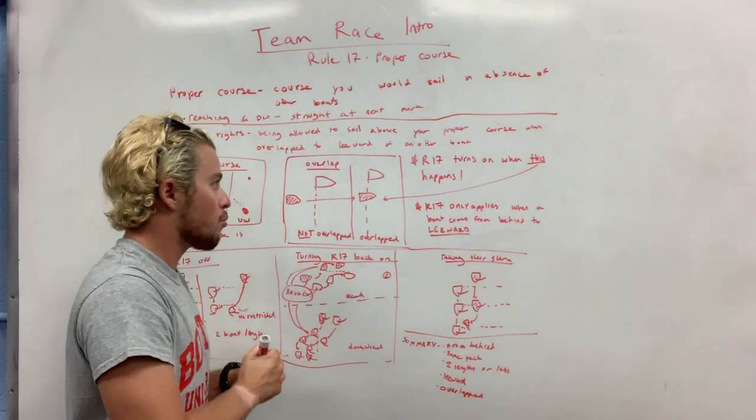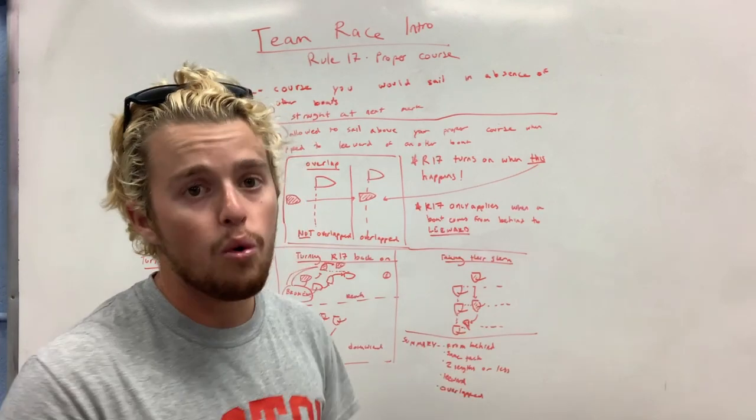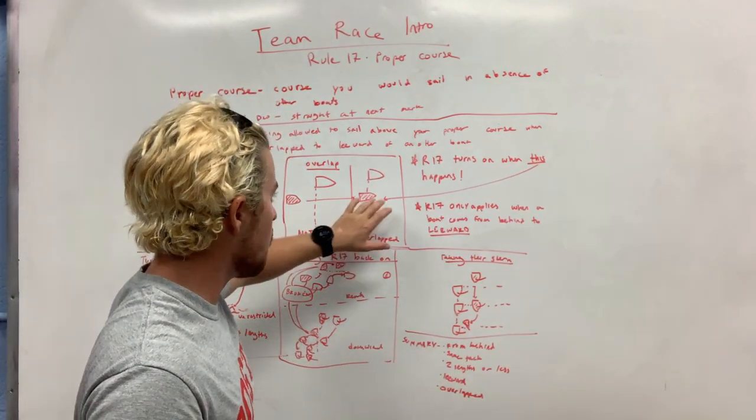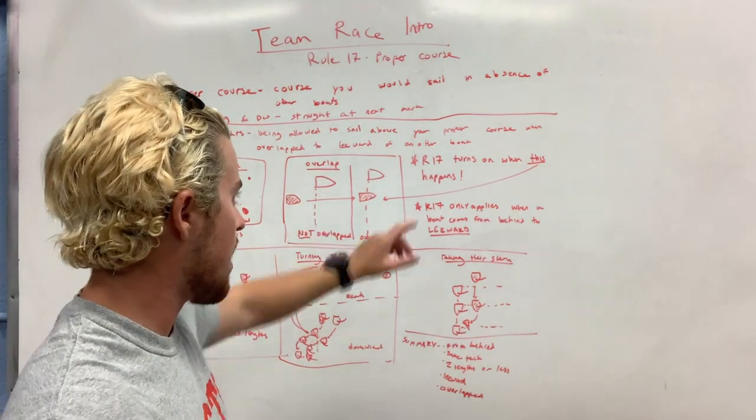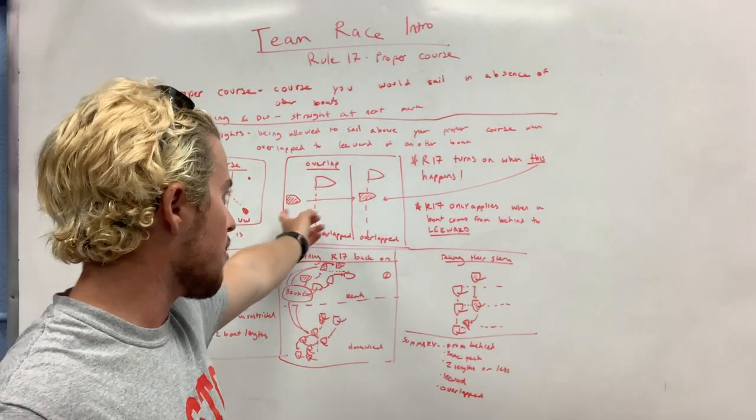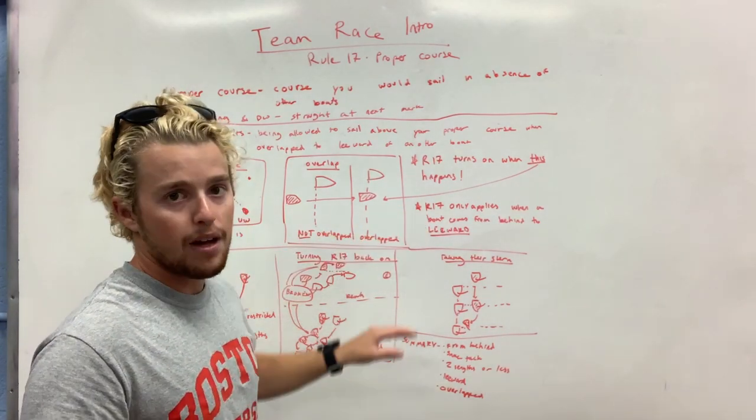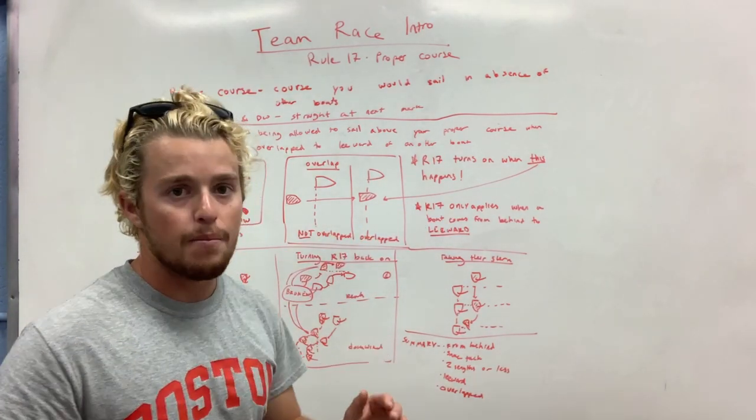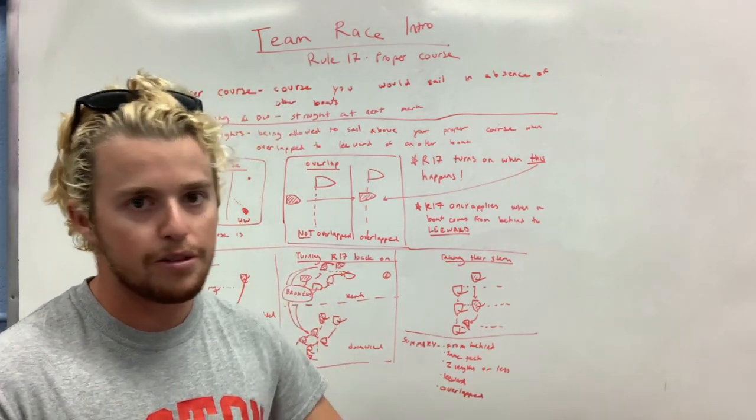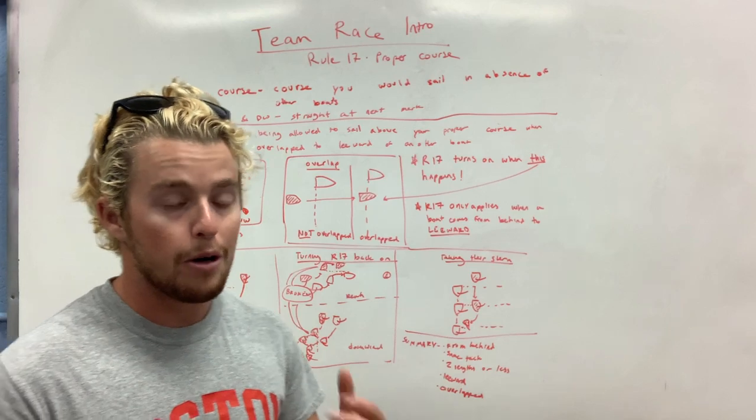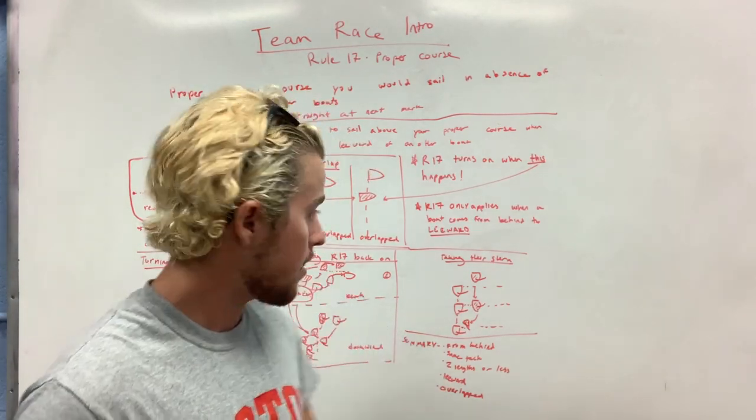Rule 17 turns on when this happens, and it only applies to the leeward boat. It doesn't affect the windward boat at all. It happens when a boat gets overlapped from behind. Rule 17 only applies when the boat comes from behind and goes to leeward. If they come from behind and go to windward, that's a completely different story. So it applies to a leeward boat who comes from behind.